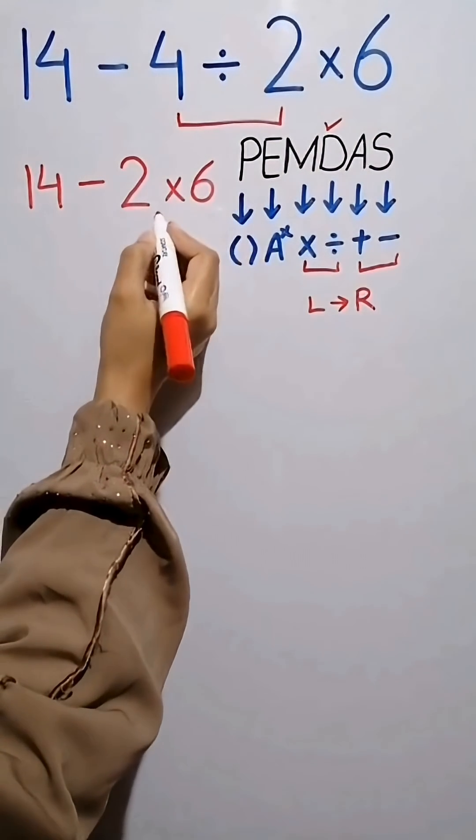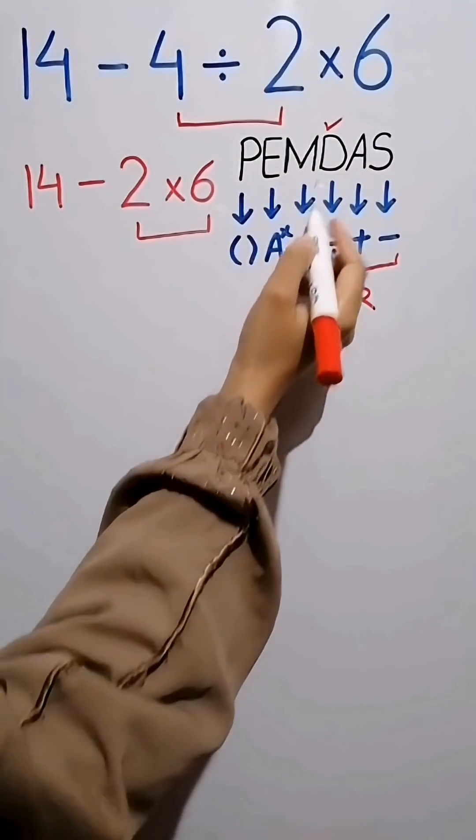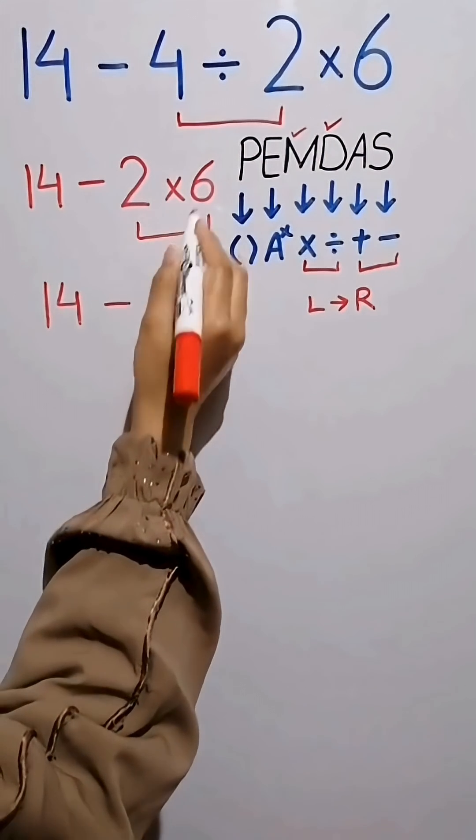we have subtraction and multiplication. First we do this multiplication because multiplication has higher priority than subtraction. And write this expression as 14 minus 2 times 6 equals 12.